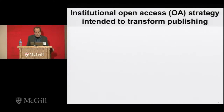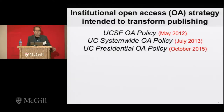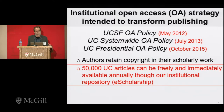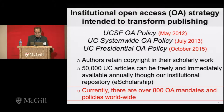At UCSF and the UC system, our open access strategy follows along these lines. We started with a series of open access policies — UCSF passed one in 2012, the UC system passed one applying to all faculty in 2013, and in 2015 we passed one applying to all scholars: faculty, staff, and students. In these policies, authors get to retain copyright in their scholarly work, allowing the roughly 50,000 articles UC generates every year to become freely and immediately available through our institutional repository, eScholarship. Currently, there are well over 800 open access mandates and policies worldwide.